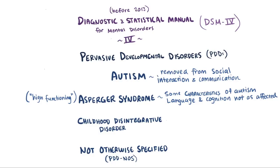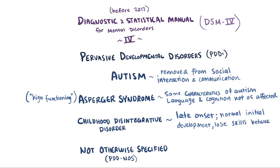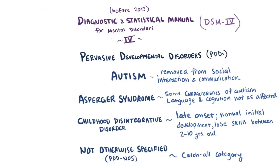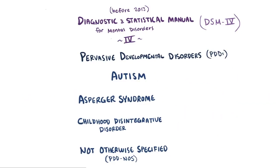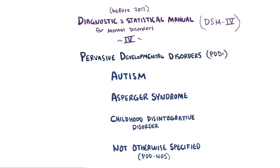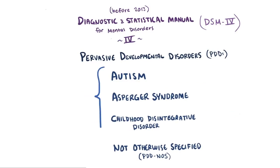Childhood Disintegrative Disorder was used to describe late onset of developmental delays, so these children develop normally for their age but then seem to lose their acquired social and communication skills, sometimes between age two and ten. Pervasive Developmental Disorder, not otherwise specified, is essentially a catch-all category in which patients meet some but not all features of autism, Asperger's syndrome, or Childhood Disintegrative Disorder.